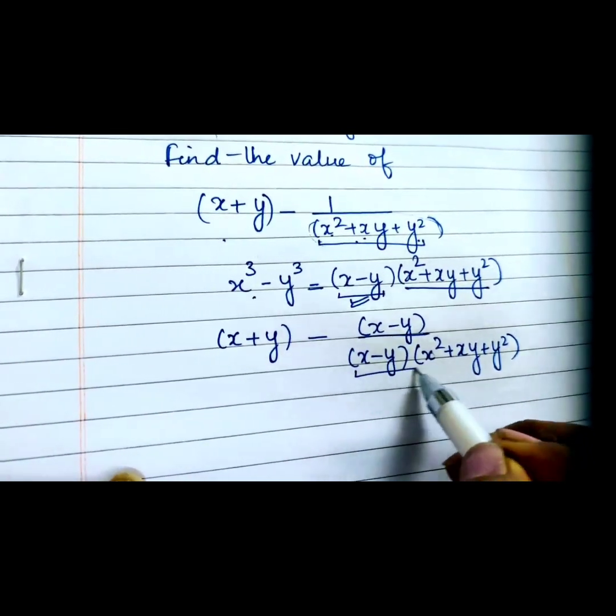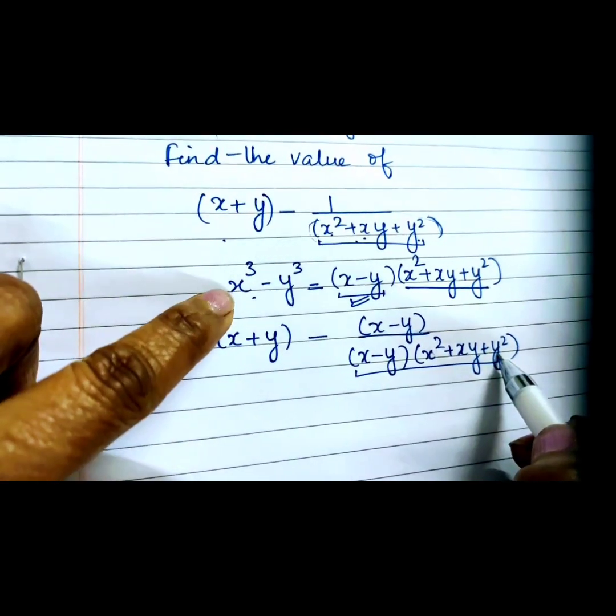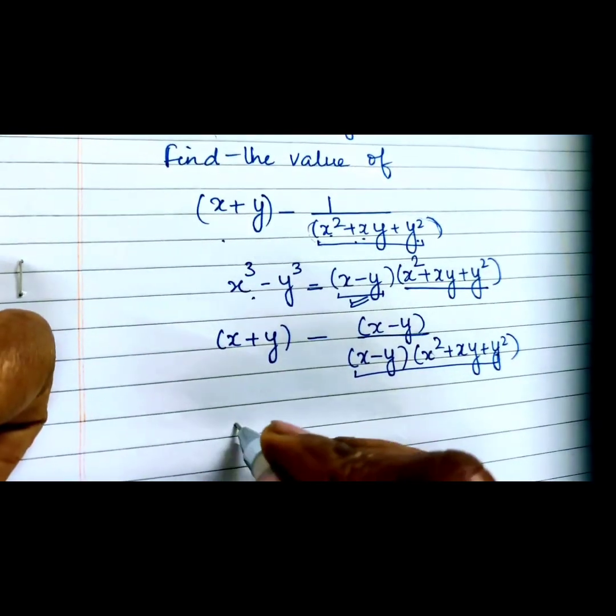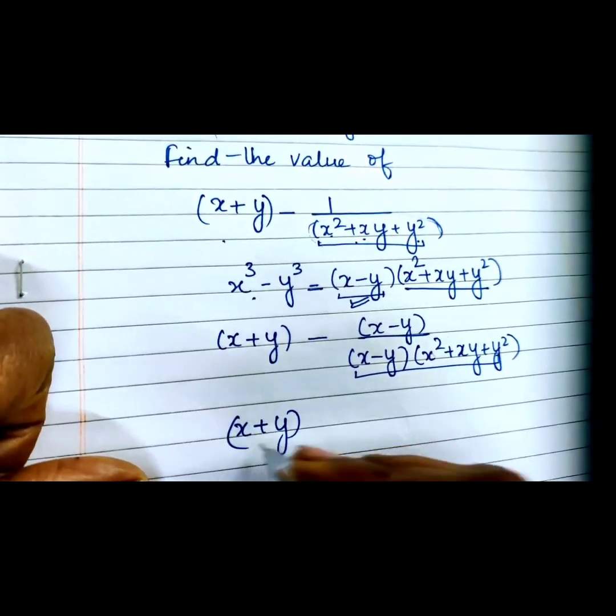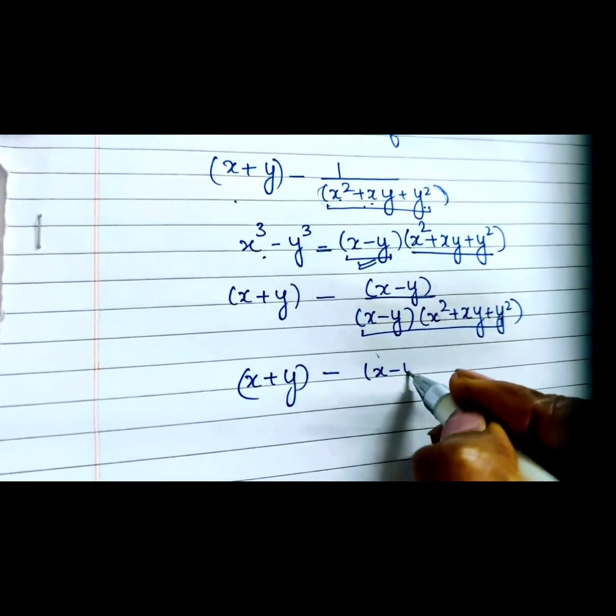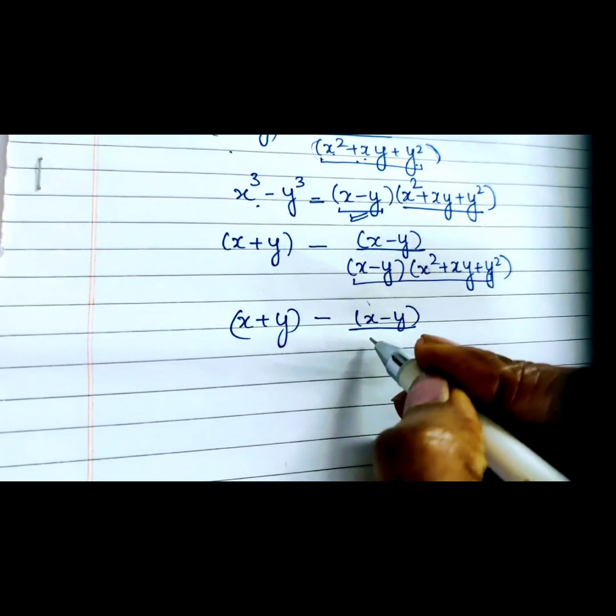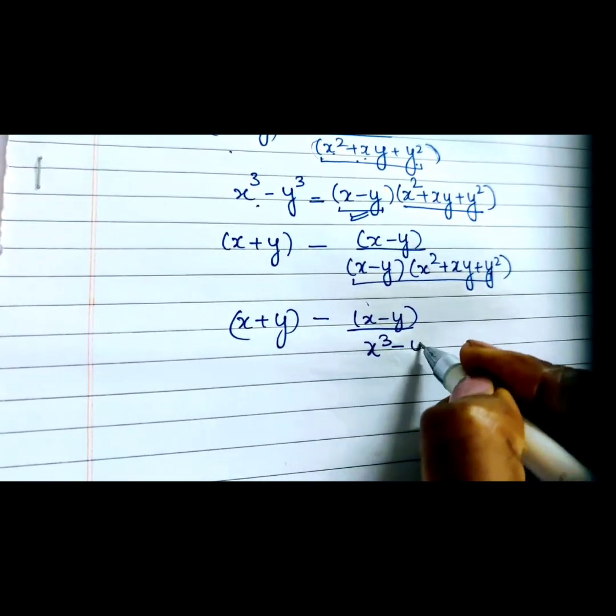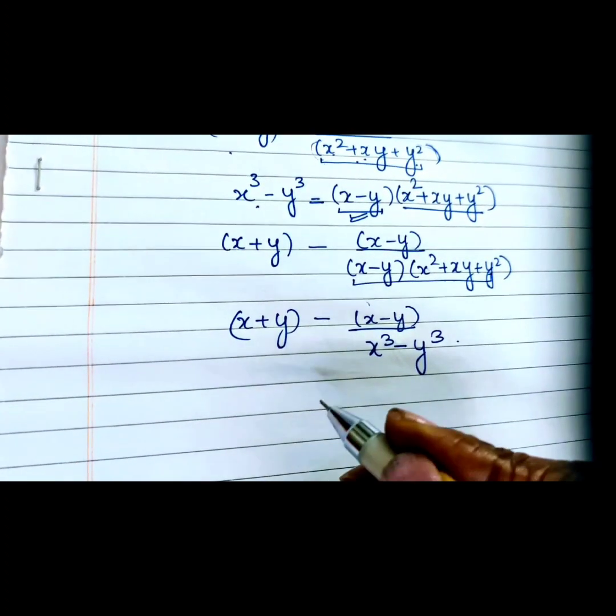what we get in the denominator is x³ - y³. In the numerator, this becomes (x + y) - (x - y), and in the denominator, x³ - y³. Now put the